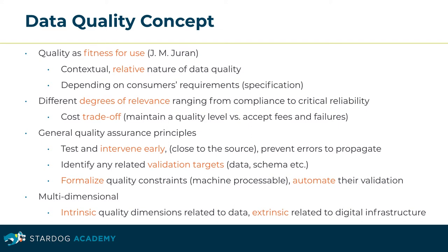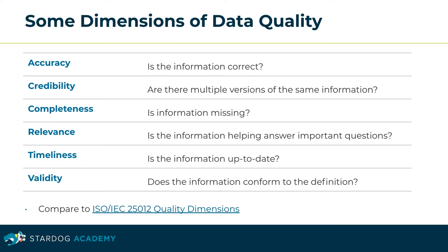Data quality is not only contextual, but multifaceted in nature. Your validation process should consider the intrinsic dimensions related to data itself, as well as the extrinsic parameters related to the provisioning infrastructure. Within the boundaries of inherent and extrinsic system-dependent quality categories, the related standard ISO 25012 specifies a range of quality dimensions such as accuracy, which addresses whether the data is correct — formally and conceptually aligned with what is considered valid in a particular domain.